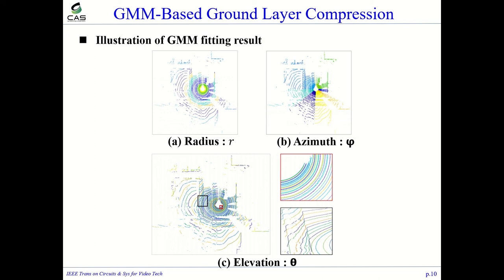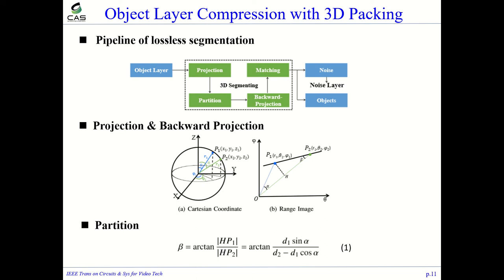Most objects are distributed sparsely in 3D space, and due to these empty nodes, it becomes challenging to use neighboring points to make good predictions for efficient compression. Hence, we aggregate objects into a compact space by 3D packing to remove free regions between objects.